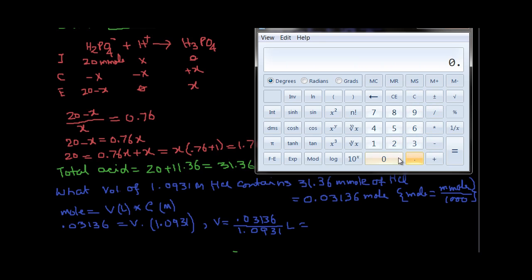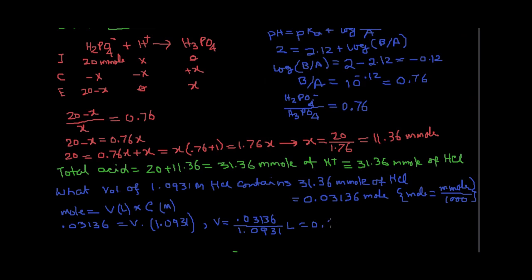We have 0.03136, dividing that by 1.0931, that is equal to 0.0286, so 0.029, 286, 287. So 0.0287 liters.